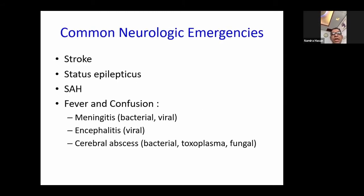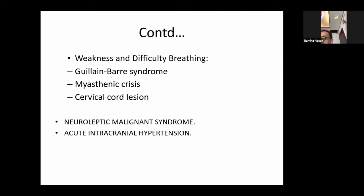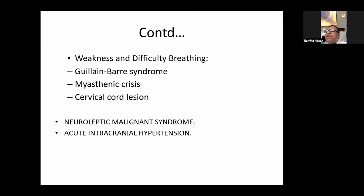The commonest neurological emergencies we encounter in day-to-day practice are: first and most important, stroke; second, status epilepticus; third, subarachnoid hemorrhage; fourth, fever and confusion presenting as meningitis — which may be bacterial, viral — and cerebral abscess. Additionally: weakness and difficulty in breathing, mostly Guillain-Barré syndrome, myasthenic crisis, cervical cord compression, neuroleptic malignant syndrome, and acute intracranial hypertension.